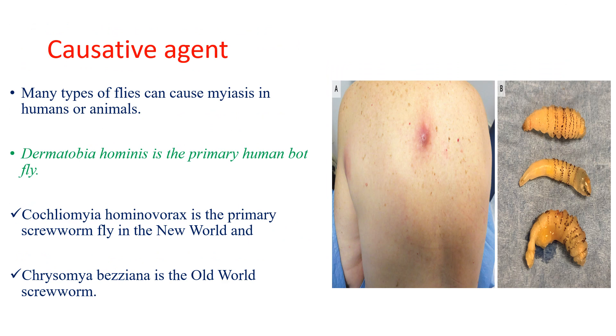When we see the causative agent, many types of flies can cause myiasis in humans or animals, but Dermatobia hominis is the primary human bot fly.